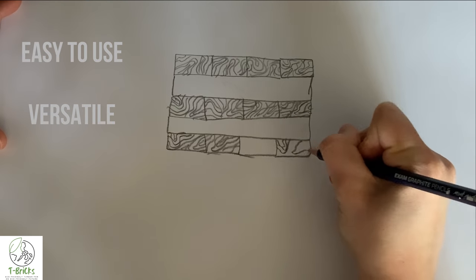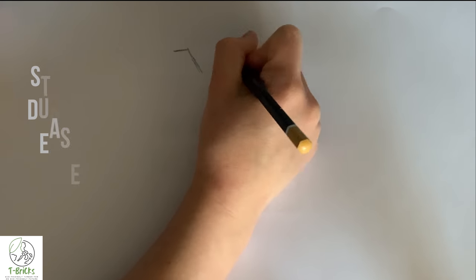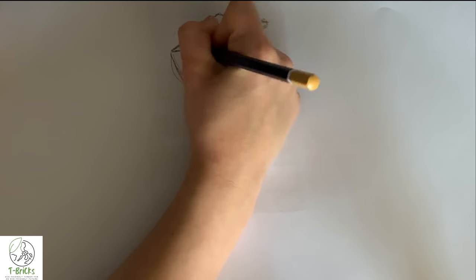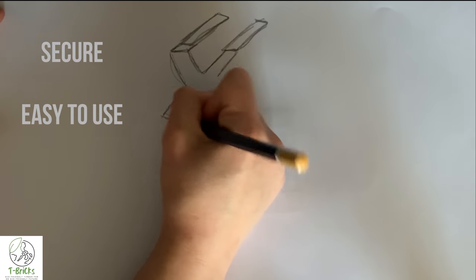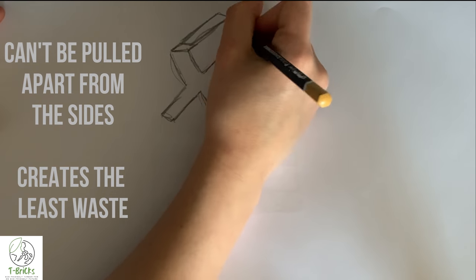In developing the T-Brick prototype, many types of joint options were drawn up onto AutoCAD and explored for strength, durability and ease of manufacture. The cross-joint option for the T-Brick prototype is a joint that was found to be the most secure and easy to use. It can be cut on the sides and also creates the least waste.